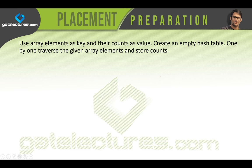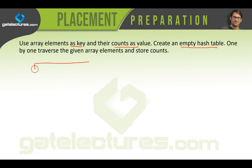The second solution says: use the array elements as keys and their counts as values. Create an empty hash table and traverse the array elements one by one, storing the counts inside the hash table. For example, consider this array with values 2, 1, 4, 2, 1, 4, 1, 4, 1, 4, 2 — that is 11 elements at index locations 0 through 9, plus one more element assumed to be 1.